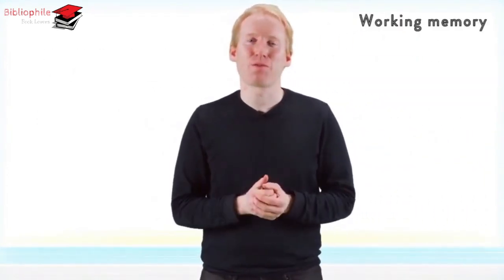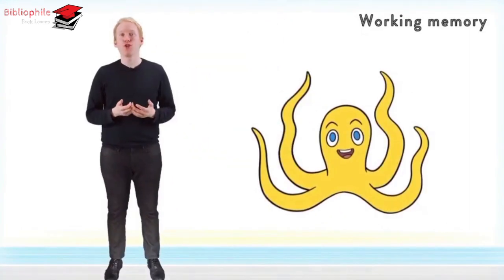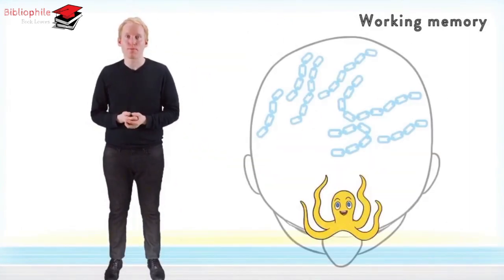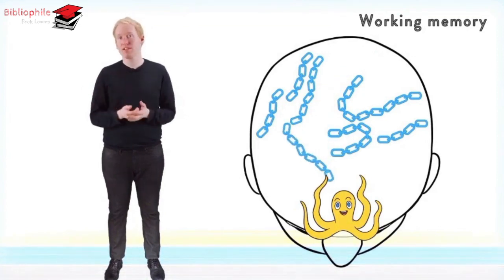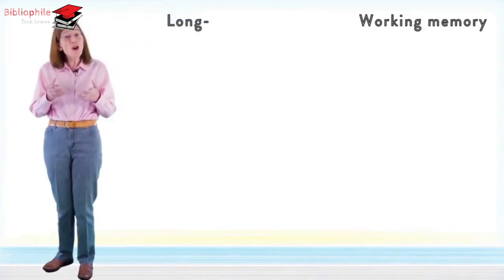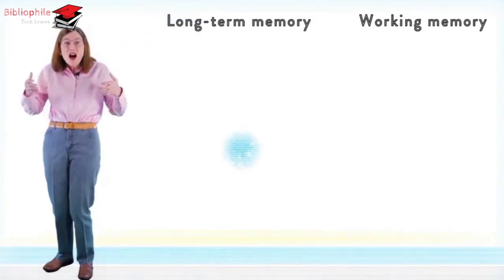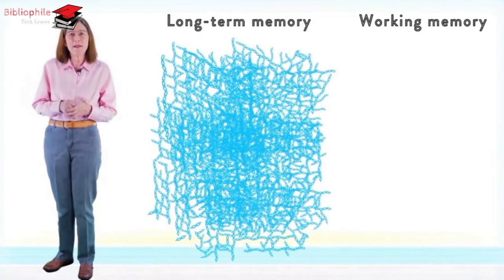We like to think of working memory as an octopus that uses its arms to connect your thoughts. It can reach into long-term memory to connect sets of links that you've stored there. Remember how we said that your long-term memory has an almost unlimited storage capacity?